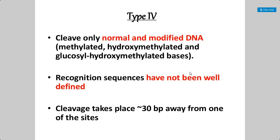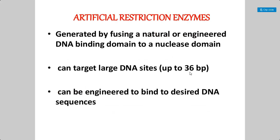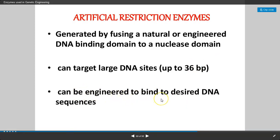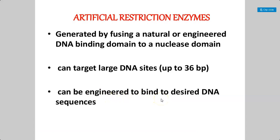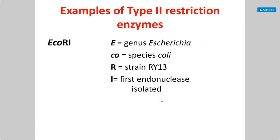Because Type 4 recognition sequences are not well defined, these enzymes are not generally used in genetic engineering or recombinant DNA technology. Cleavage occurs about 30 base pairs away from one of the recognition sites. Artificial restriction enzymes are generated by linking a natural or engineered DNA binding domain to a nuclease domain. These can target large DNA sites up to 36 base pairs and can be engineered to bind to any desired DNA sequence.